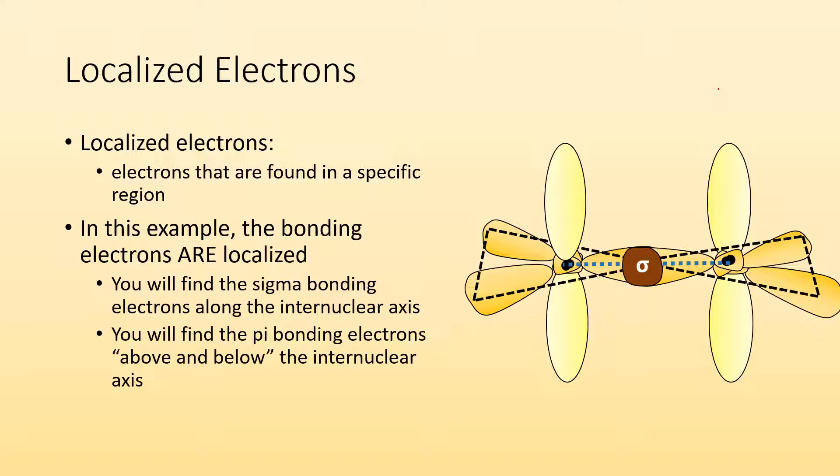You'll find the pi bonding electrons above and below the internuclear axis. So those pi electrons are localized. That's where you're going to find them.